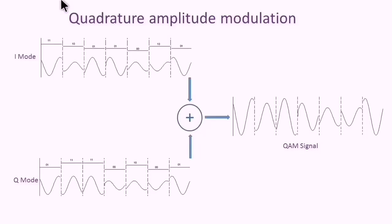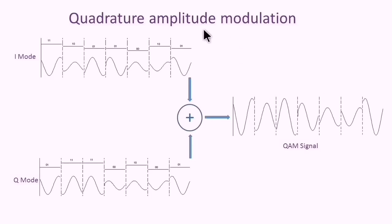Modulation combined with smart encoding techniques, where each signal change represents more than one bit, can increase the channel bandwidth — as in the case of QAM, where both amplitude and phase changes contribute to represent the bits.